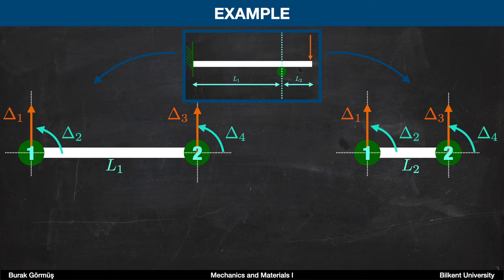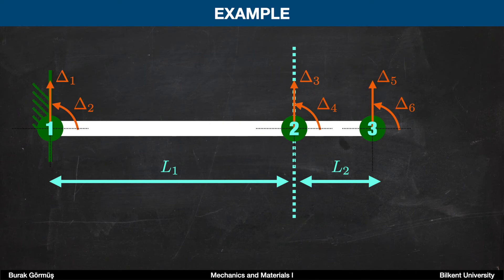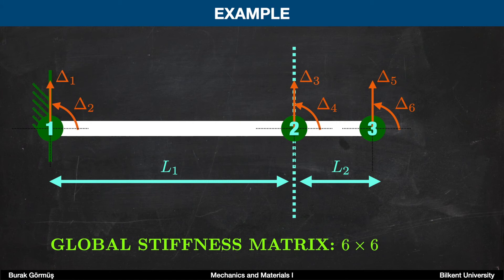You can see that the slope at node two for the L1 element is the same as the slope at node one for the L2 element. As a result, we need to combine them — we need to go from local to global and express the coordinates differently so that we can assemble our structure. After the assembly procedure, we can express the unknowns for node two by combining element one and element two. In this geometry, we have three nodes with two coordinates per node, so our global stiffness matrix should be 6×6.